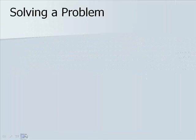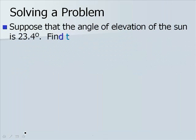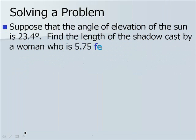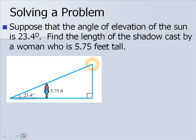Let's look at one more example. Suppose that the angle of elevation of the sun is 23.4 degrees. We want to find the length of the shadow cast by a woman who is 5.75 feet tall. We have the following picture. Here's our angle of elevation above the horizontal, 23.4 degrees. Here's our woman, and our height is labeled as 5.75. What we want to find is the length of our shadow, so we'll call that X.